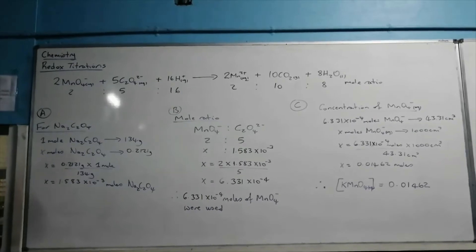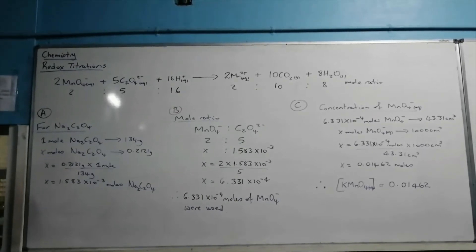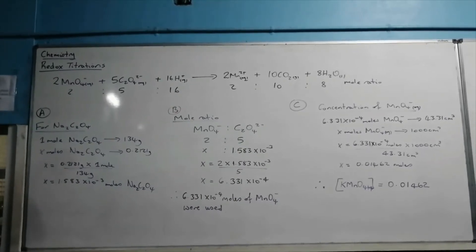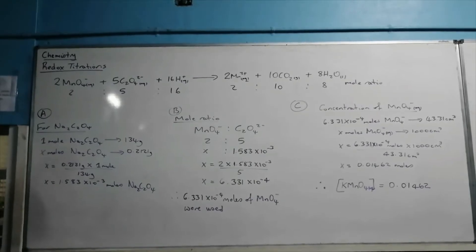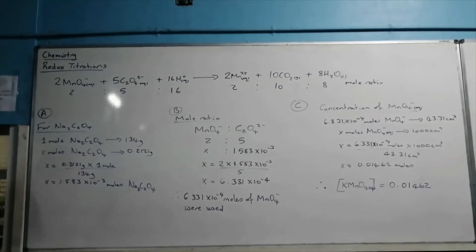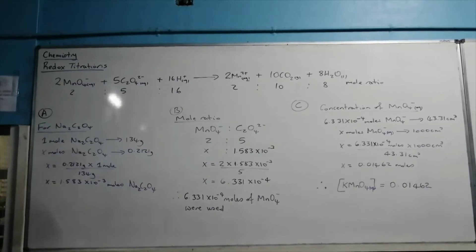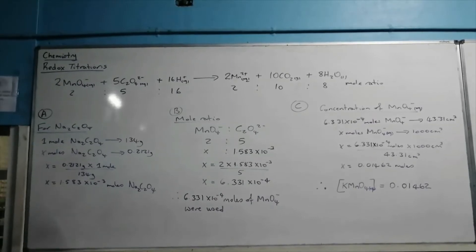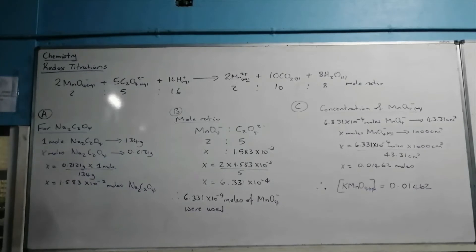In this redox reaction question, we see that we have potassium permanganate solution reacted with sodium oxalate solution in acid, which would be sulfuric acid, to produce the Mn²⁺ ion, carbon dioxide gas, and water.